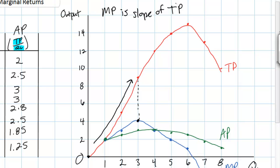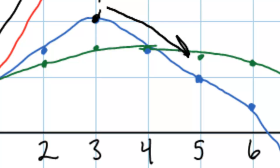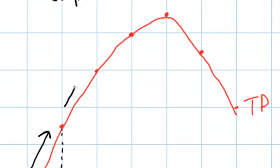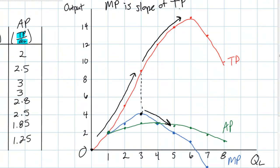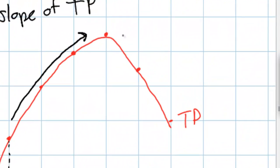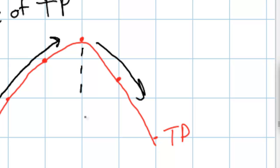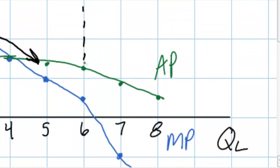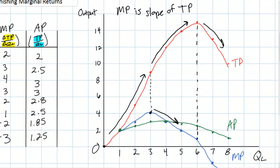At any point along our total product curve, the slope at that point is the marginal product — it measures the change in total product divided by the change in the quantity of workers. When marginal product begins decreasing beyond three workers, the slope of total product also begins decreasing. Beyond three workers the total product curve continues to increase but gets flatter and flatter, indicating that the change in total product is becoming less and less. Ultimately beyond six workers the total product begins decreasing, which occurs at the point at which marginal product becomes negative, causing total product to slope downwards.